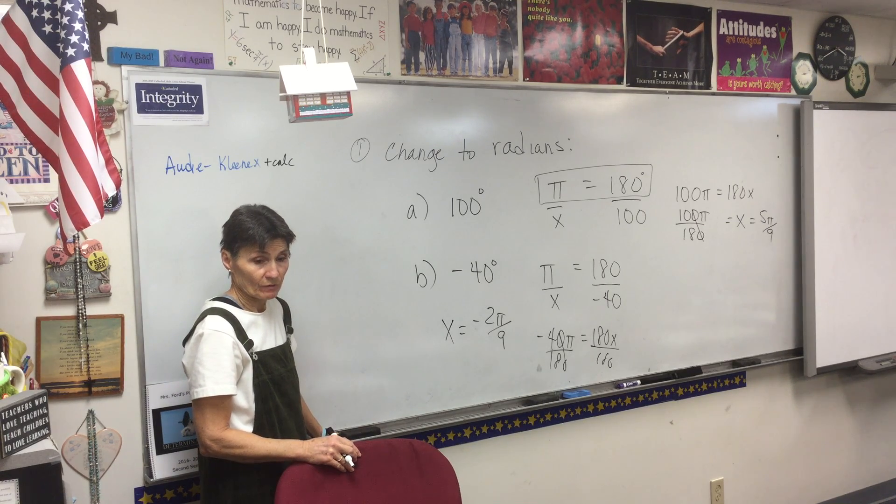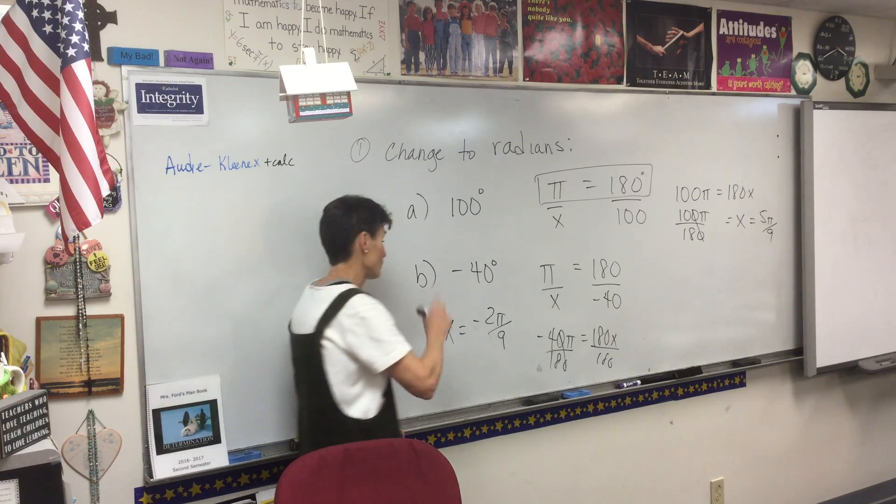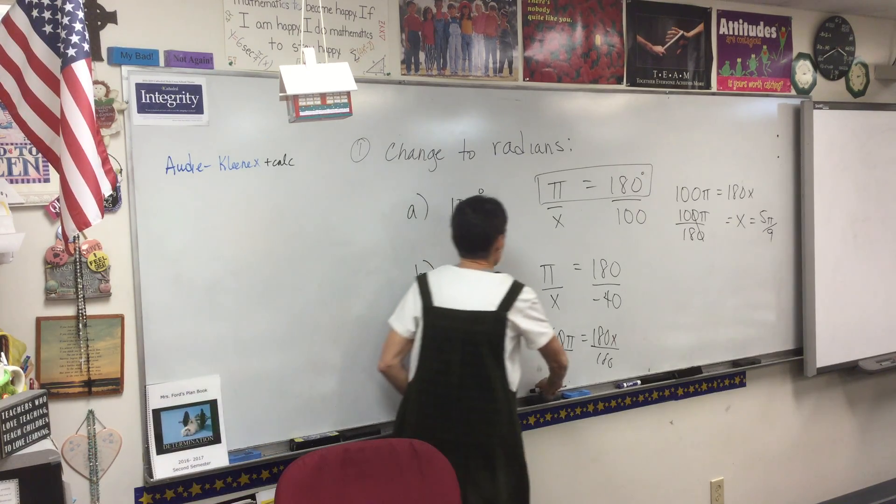So I'll reduce that and I end up with negative 2π over 9. Is that okay with everybody? Alright, now we'll go the other way.